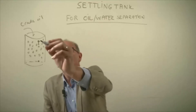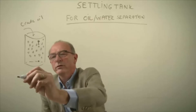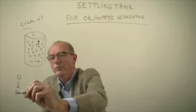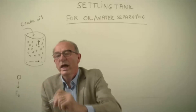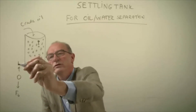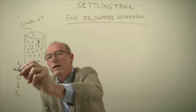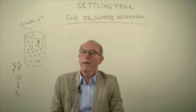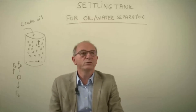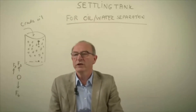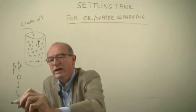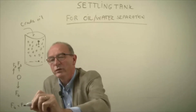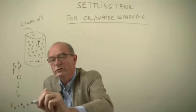Let's take out this water droplet which is falling down. It's falling down by gravity and is counteracted by a buoyancy force and by a drag force. In a steady state situation you have to set up the balance, and you can see that in this case the gravity force is equal to the buoyancy force plus the drag force.